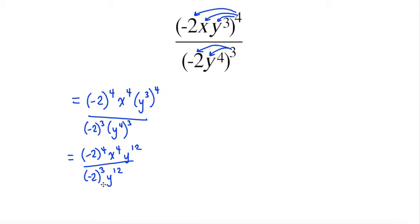So from here, what I'm going to do is simplify my exponents using what I know about dividing. So anytime I'm dividing and my bases are the same, I subtract my exponents.